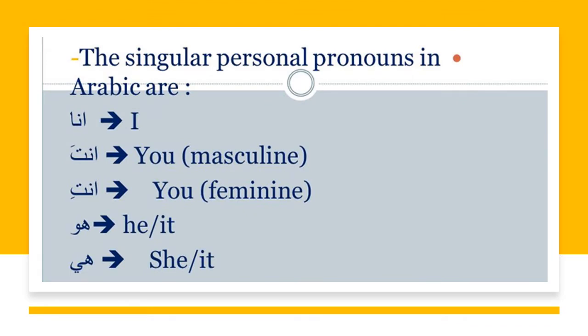The five pronouns are: Anna, which means I. Anta, which means you and is used for male. Antti, which means you and is used for female. Hua, which means he. And Hia, which means she.